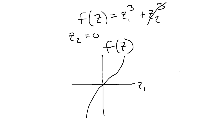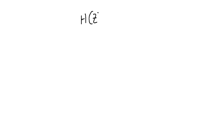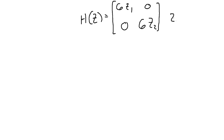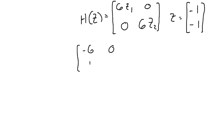To show a function is not convex, we just need to find one point where the Hessian is not positive semi-definite. I'll use the point z = (−1, −1). The Hessian is [[6z1, 0], [0, 6z2]], and evaluating at z = (−1, −1) gives H = [[−6, 0], [0, −6]].